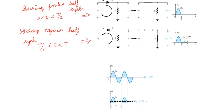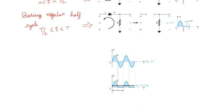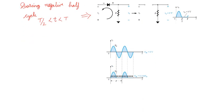Together, looking at both waveforms: for the positive half, the output is the same as the input. During the negative half of the input, the output is 0. For the next positive half, I get the same output again; for the next negative half, output is 0 again. This repeats cycle after cycle — I have only a positive half cycle at the output. That is why it is called a half wave rectifier.